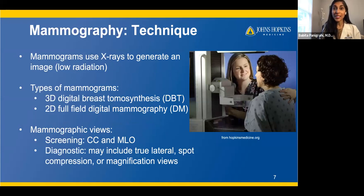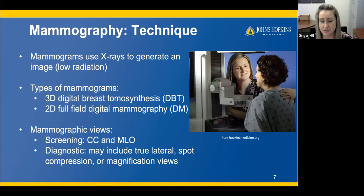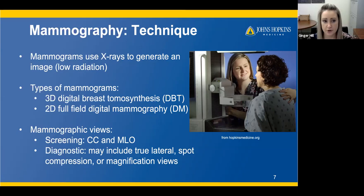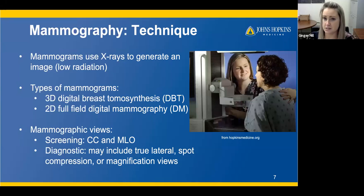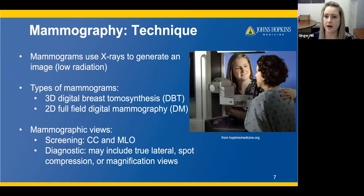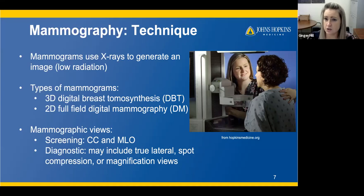Ginger is going to go over mammography techniques. Mammography uses x-rays to generate images. This x-ray is low radiation, and the types of mammograms available are 3D and 2D. In a nutshell, we like to explain that 3D is like looking at a loaf of bread that's sliced — you can take a slice away and look at it and put it back. 2D is if you had that loaf of bread and imaged it unsliced, so you cannot take a specific slice out and look at it.